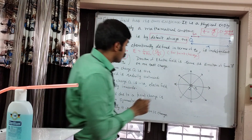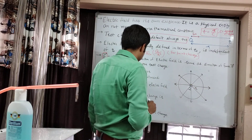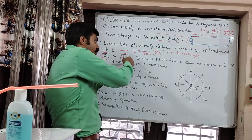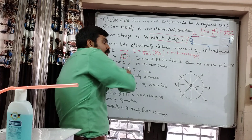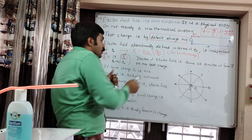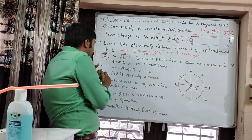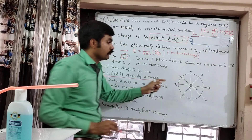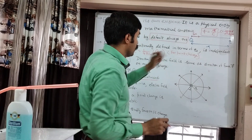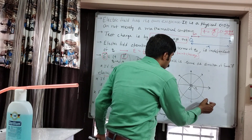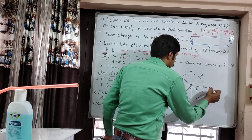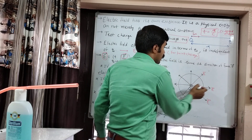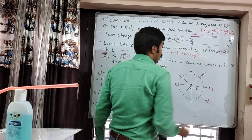If the source charge is positive, then the test charge is by default positive. The force on that test charge will be repulsive. Therefore, we say the electric field of a positive source charge is radially outward. As shown here, these arrows are showing the direction of the electric field vector. At different points, the direction of the electric field vector will be different.